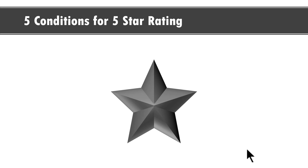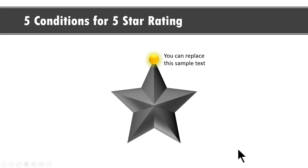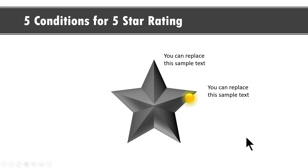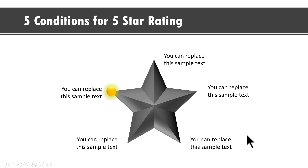Here we talk about five conditions for a five-star rating. If you have to achieve a five-star rating, what are the five conditions you need to satisfy? You could always present this information as a boring list of bullet points, but this way is definitely going to capture your viewers' attention. On a click, we talk about each condition for the five-star rating, moving from the first through to the fifth. It's a very beautiful animation based on the five-star rating concept used in performance reviews, electrical appliances, and the service industry. Let us see how to create this graphic from scratch.